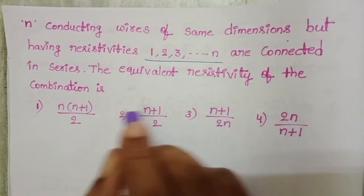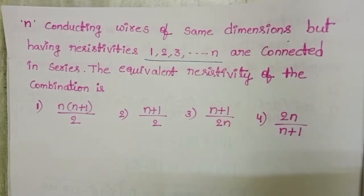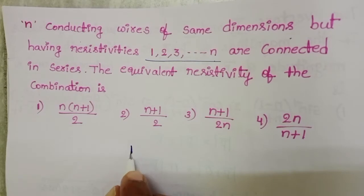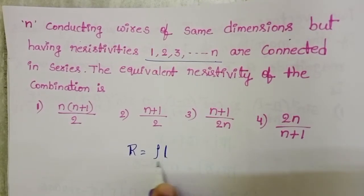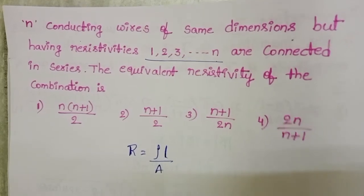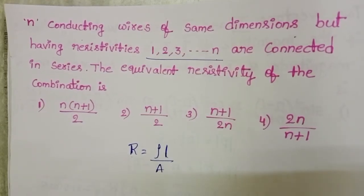The equivalent resistivity of the combination is, here resistance is equals to specific resistance into length of the wire by area of cross section. R is equals to rho L by A.